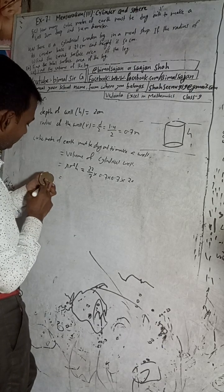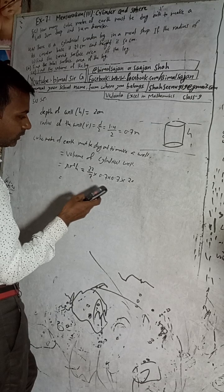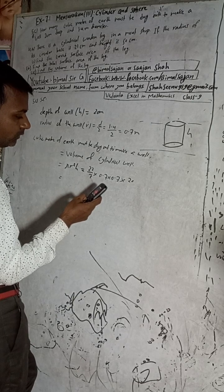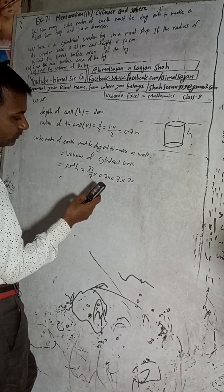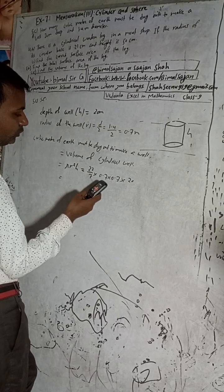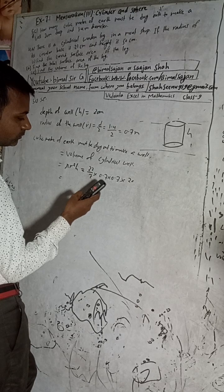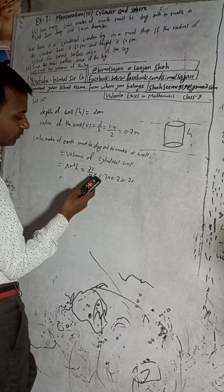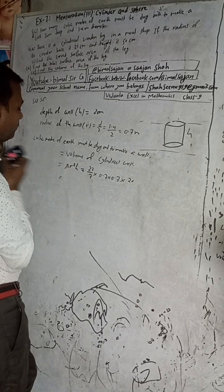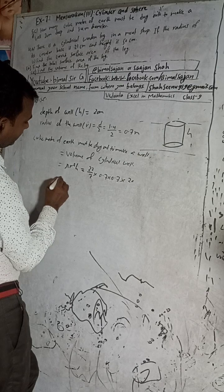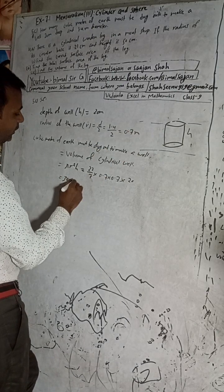So this is equal to now here: 20 into 0.7 into 0.7 into 22 divided by 7 equals 30.8. 30.8 meter cube.